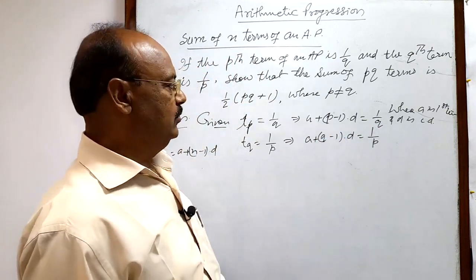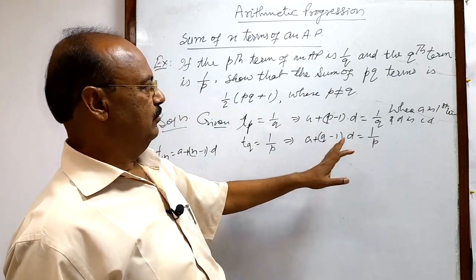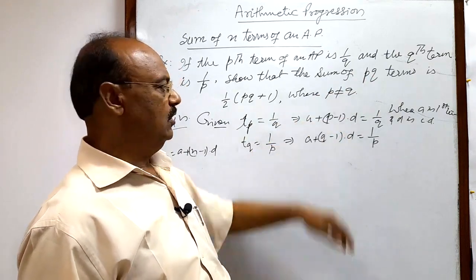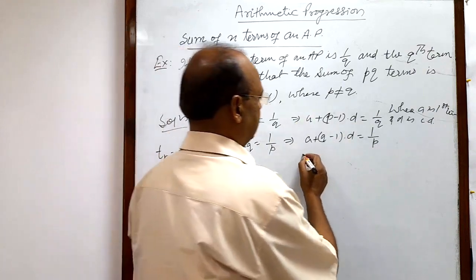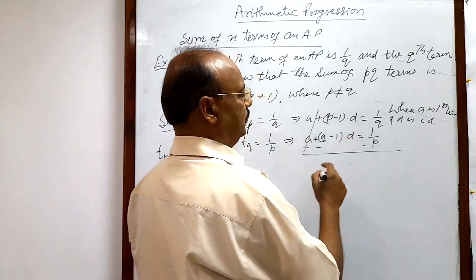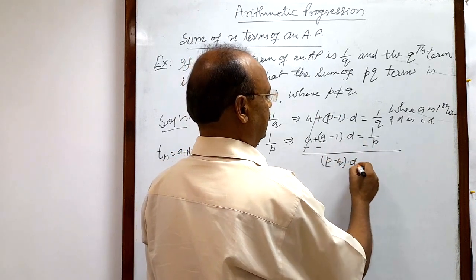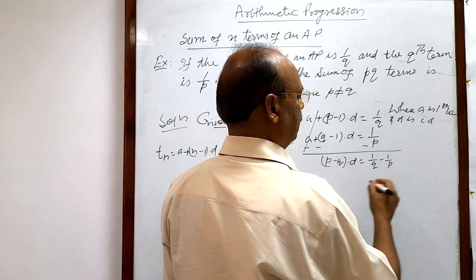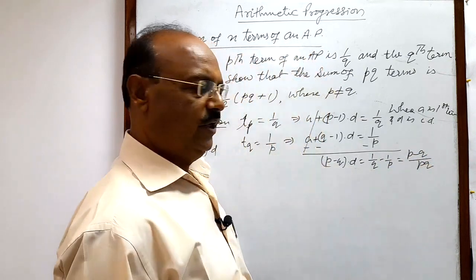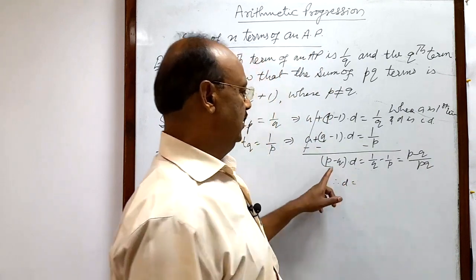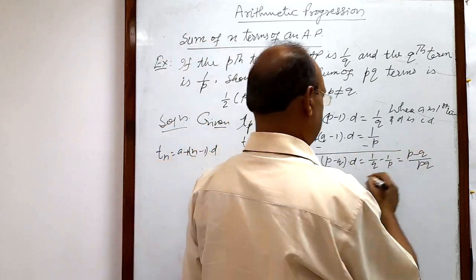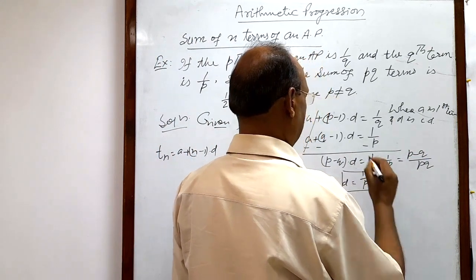We are trying to get the values of a and d, which will be used for finding the sum of pq terms. Subtracting equation 2 from equation 1, a cancels out, and we get (p − q)d = 1/q − 1/p = (p − q)/pq. Therefore d = 1/pq, since (p − q) cancels from both sides.